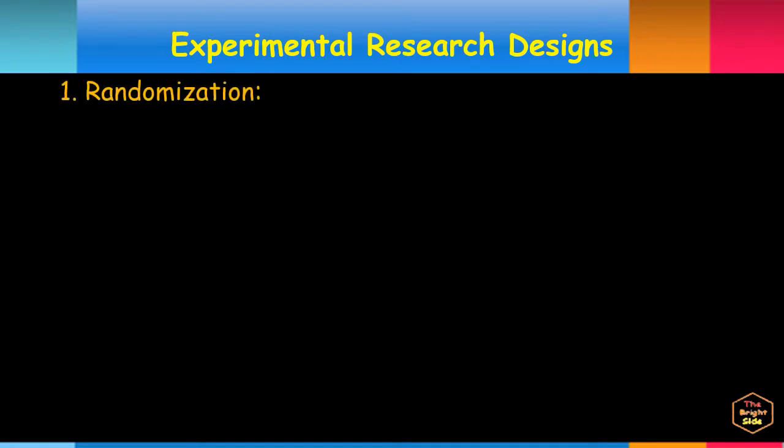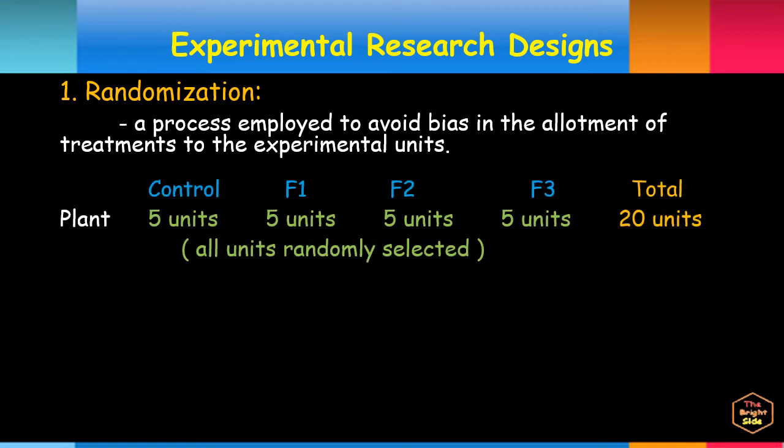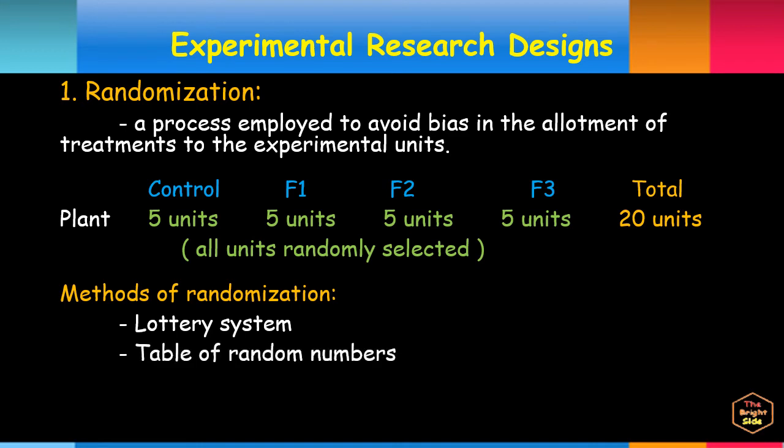Randomization is a process employed to avoid bias in the allotment of treatments to the experimental units. To do randomization, you may use the lottery system, the table of random numbers, or any randomizer sites available online.